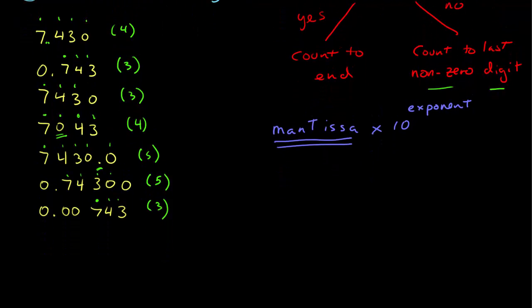Well, if we just rewrite these, we wouldn't really write the first one in scientific notation, but if you were, that would be 7.430 times 10 to the 0. The next one would be 7.43 times 10 to the minus 1, which is 0.743 in scientific notation. So you see three significant figures.